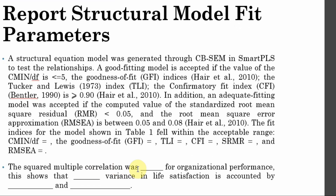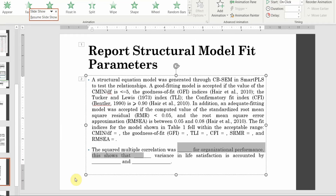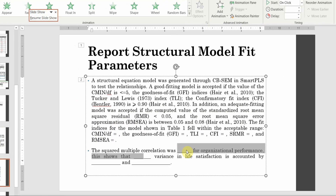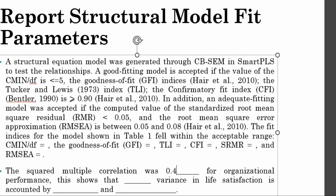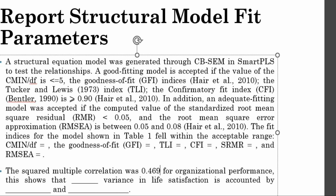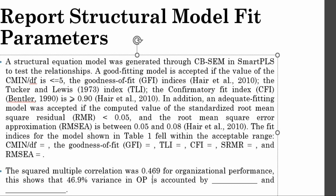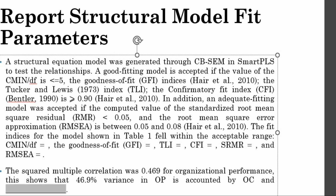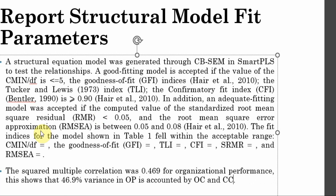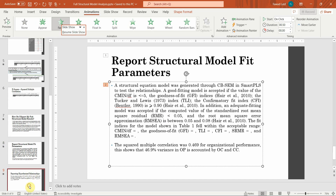The squared multiple correlation — R-square — for organizational performance was 0.469, showing that 46.9% of variance in OP is accounted for by CC and OC. This is how you report the structural model, though we still need to report the hypotheses.